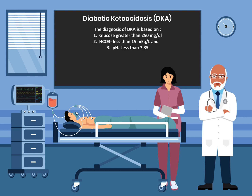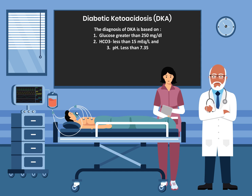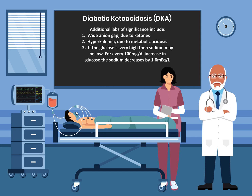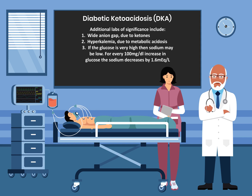The diagnosis of DKA is based on three things: number one, glucose greater than 250 milligrams per dL; number two, bicarb less than 15 milliequivalent per liter; and number three, pH less than 7.35. Additional labs of significance include a wide anion gap due to ketones, hyperkalemia due to metabolic acidosis, and if glucose is very high, then sodium may be low. For every 100 milligrams per dL increase in glucose, the sodium decreases by 1.6 milliequivalent per liter.